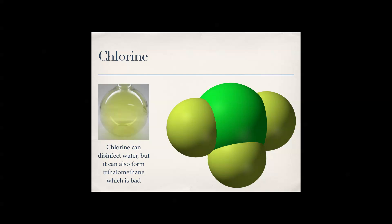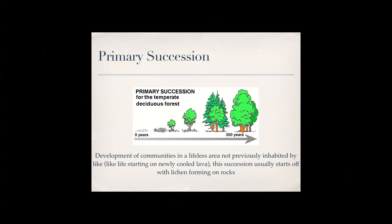Primary succession is like when lava newly forms an island in the ocean — there's no grass anywhere on that island. It starts with lichen, then some grasses, then a few trees, birds drop seeds, more trees grow, and eventually you have a forest on an island formed by lava. The key thing about primary succession is that there is no life anywhere when it starts.